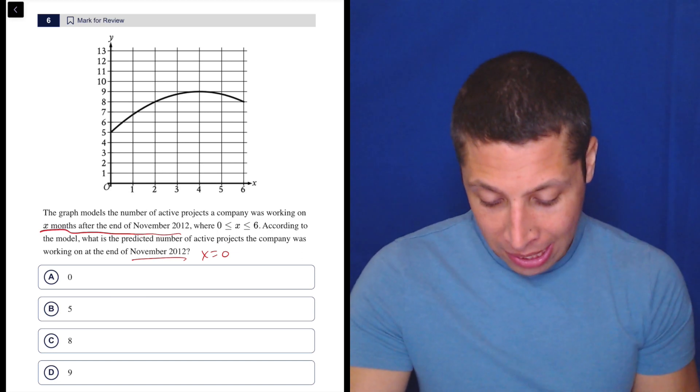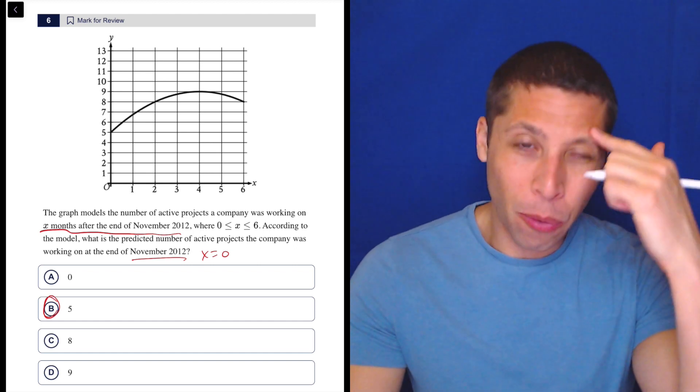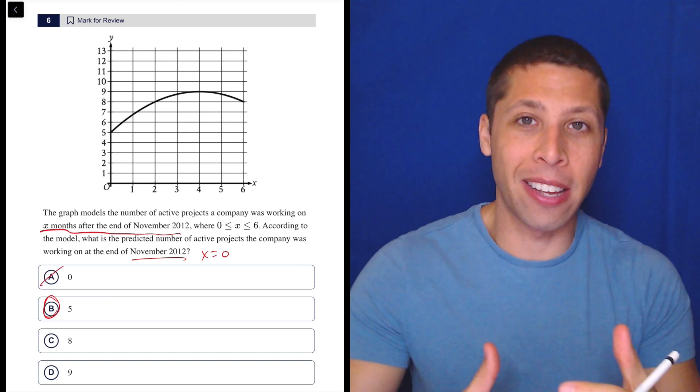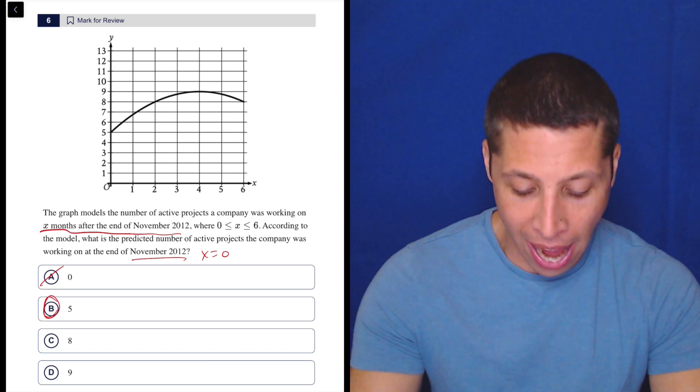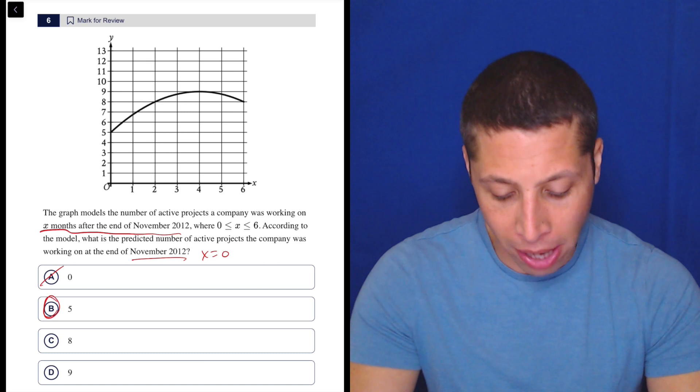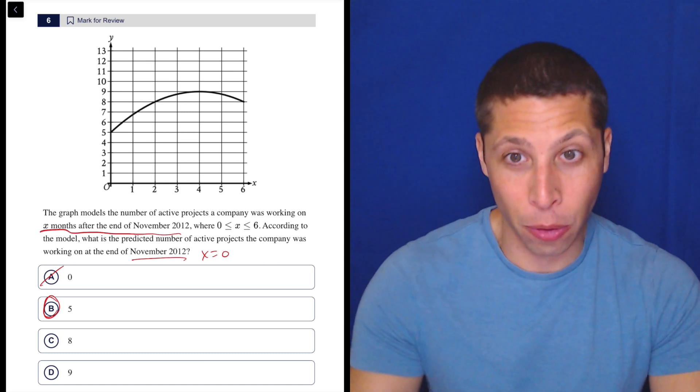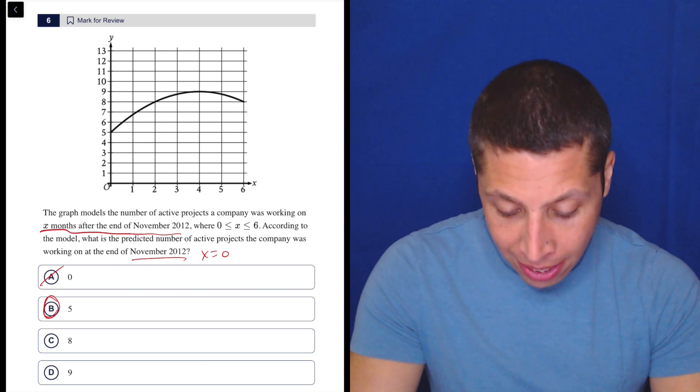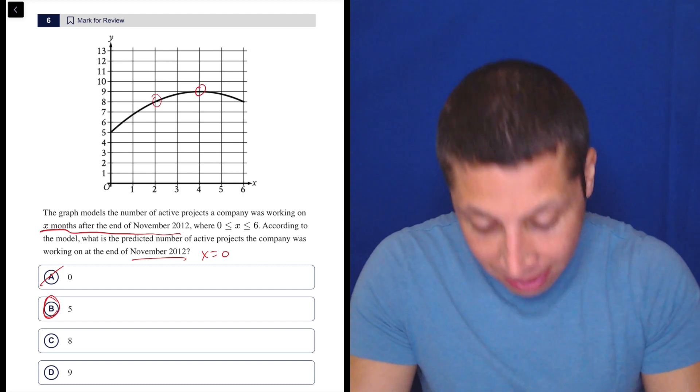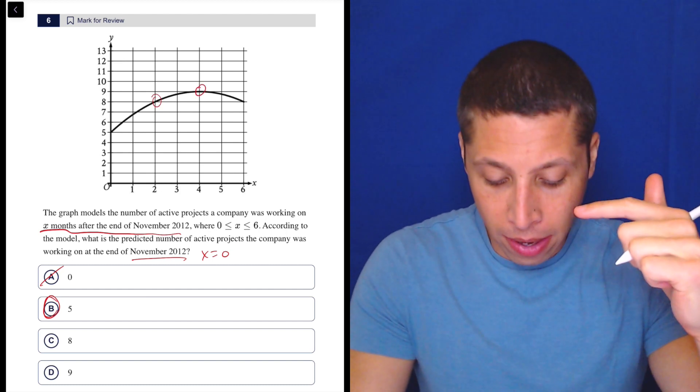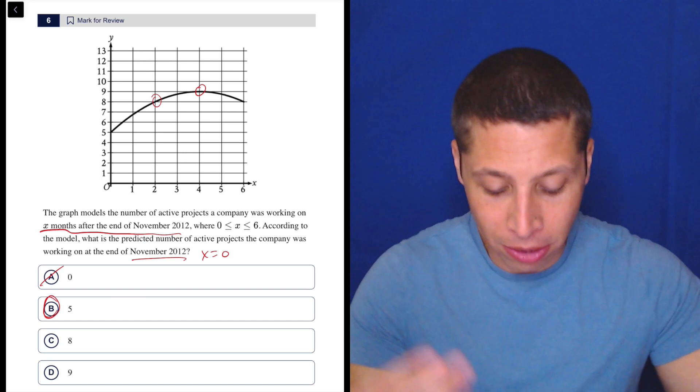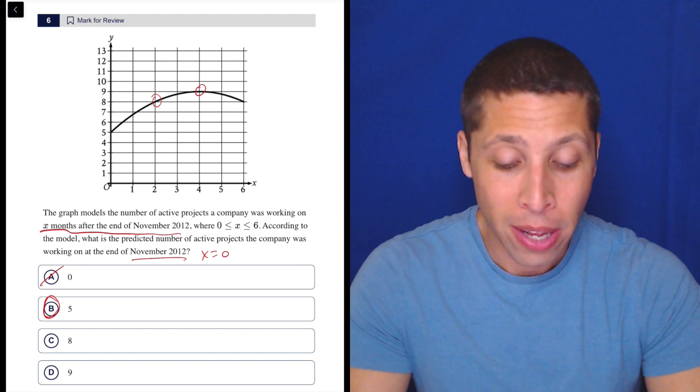So it's 5, but like what else would you put, right? 0 doesn't make any sense, right? That's the number of months. That's the x. They're not asking for that. They're asking for the y value, the predicted number of active projects, so that's kind of on the y-axis. 8 and 9, like I guess the 9 is the maximum. 8 is here, but why would you pick those? Is there anything telling you to go 2 months or 4 months ahead? I don't know.